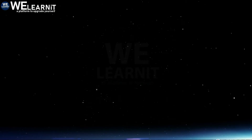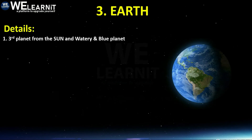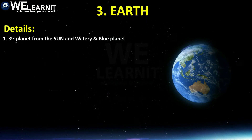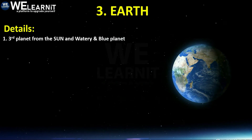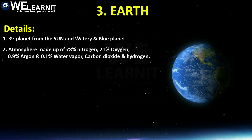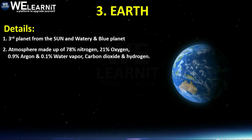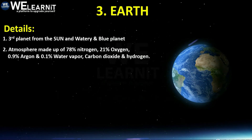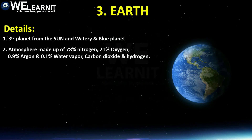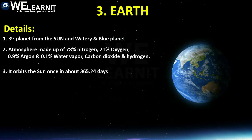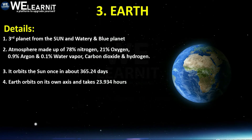The third planet is our Earth. Earth is the third planet from the Sun and is called the watery and blue planet. Its atmosphere is made up of 78% nitrogen, 21% oxygen, 0.9% argon, and 0.1% water vapor, carbon dioxide, and hydrogen. It orbits the Sun once in about 365.24 days.